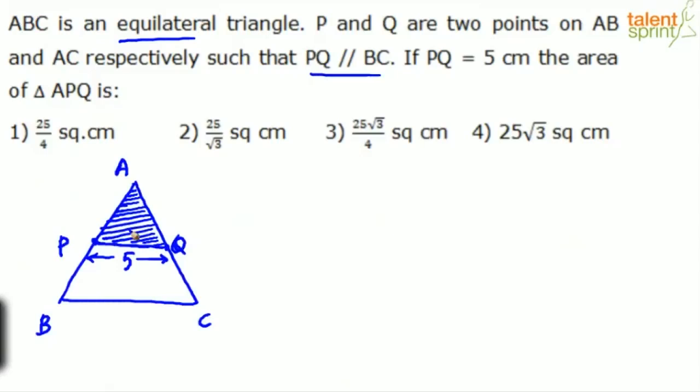What do we do? Very simple. You know that this triangle is an equilateral triangle which means each angle is 60 degrees. This is 60, this is 60, angle A also will be 60.